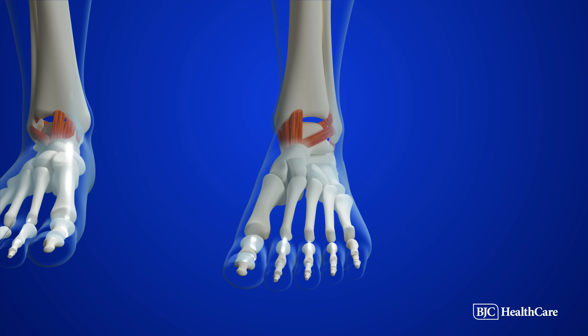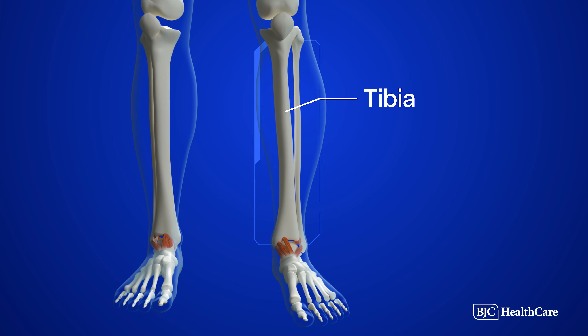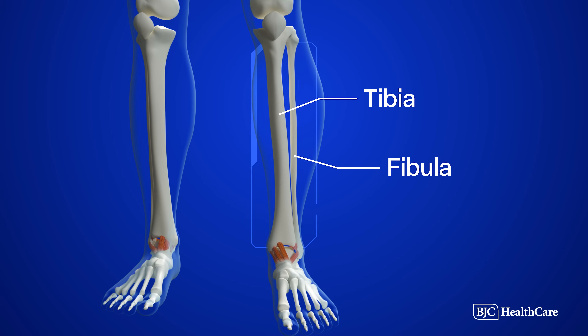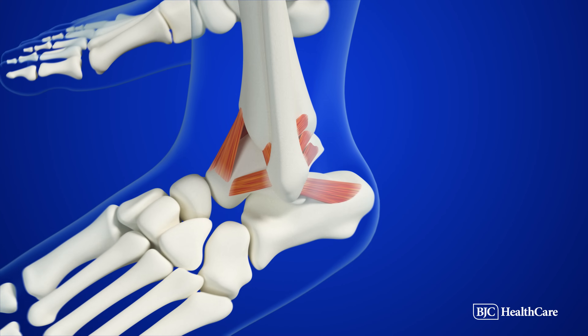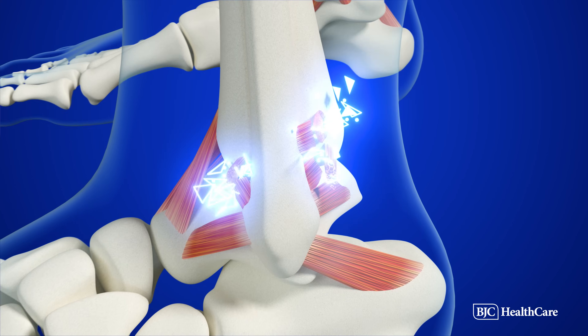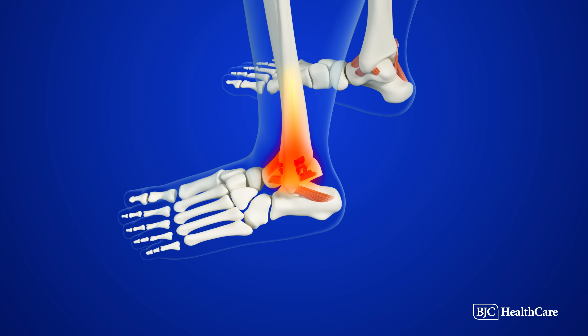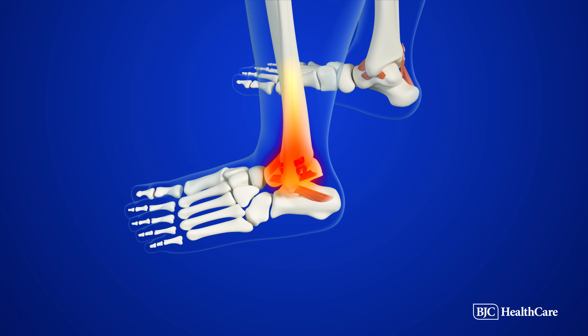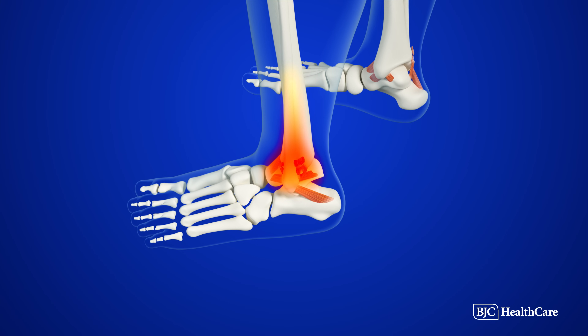A so-called high ankle sprain occurs when the foot is excessively rotated externally, or away from the body. This force damages the ligaments higher up the leg that connect the tibia, or shin bone, and the fibula, which is the smaller leg bone — hence the name high ankle sprain. These sprains are more often severe and affect the athlete's ability to bear weight and rotate at the ankle. The pain and swelling typically extends higher up the leg depending upon the severity of the sprain.